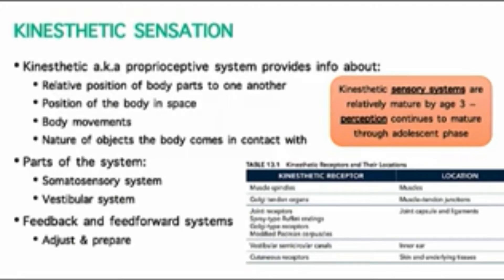Our kinesthetic sensory systems are relatively mature by about age three, but perception continues to mature throughout the adolescent phase. A lot of this comes with exposure — the more space babies have to crawl around in, the better, because the more tactile cues they get from different textures and surfaces, the more shapes they get to interact with. That's a direct transfer of kinesthetic sensation to how they perceive what's going on around them and in the environment.